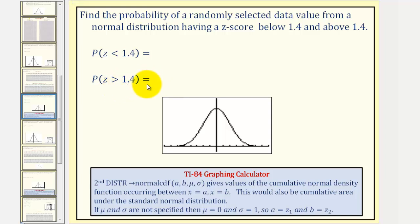Remember, if z equals 1.4, the data value would be 1.4 standard deviations above the mean. This is the standard normal distribution. Let's say z equals 1.4 is somewhere in here.